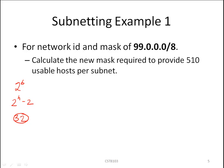So 2 to the B, that is 2 to the exponent of number of borrowed bits, equals number of subnets. 2 to the H, that is 2 to the exponent of number of host bits minus 2, is the number of hosts per subnet. And host bits plus borrowed bits plus the original number of network bits have to be equal to 32.